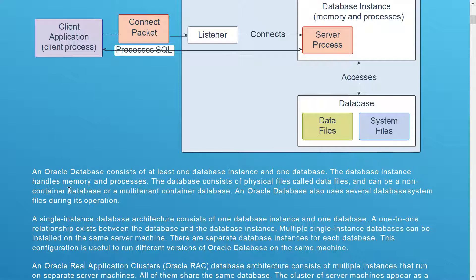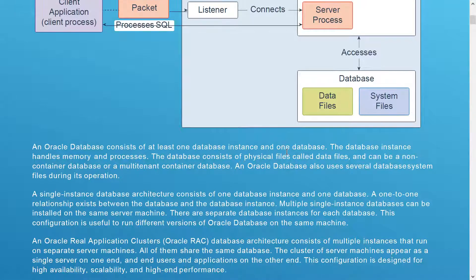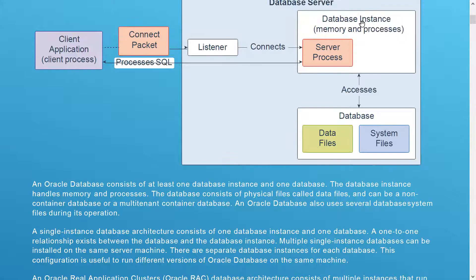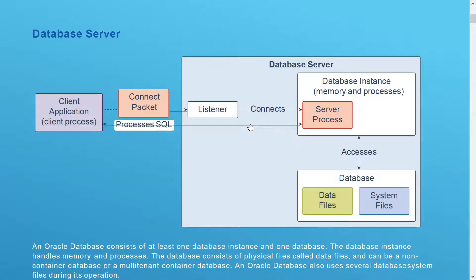It could be a container database or a multi-container database. Oracle Database also uses several database file systems during its operations. A single instance database architecture consists of one database instance along with one database — a one-to-one relationship exists between the database and the database instance. Multiple single instance databases can also be installed on the same server machine with separate database instances for each database. This configuration is useful for running different versions of the database such as 11g, 12c, and 19c on a single server.